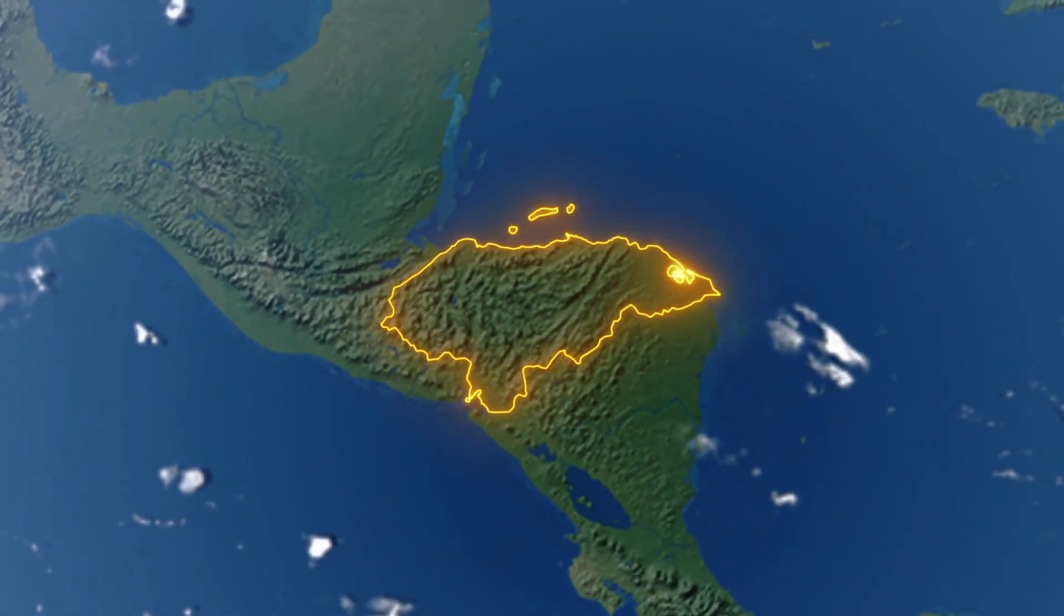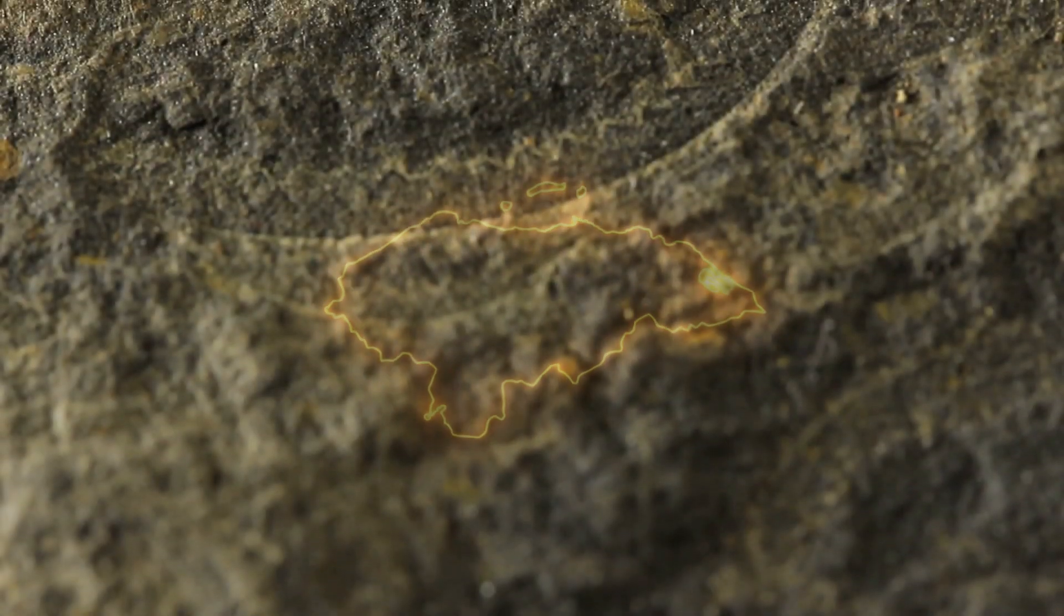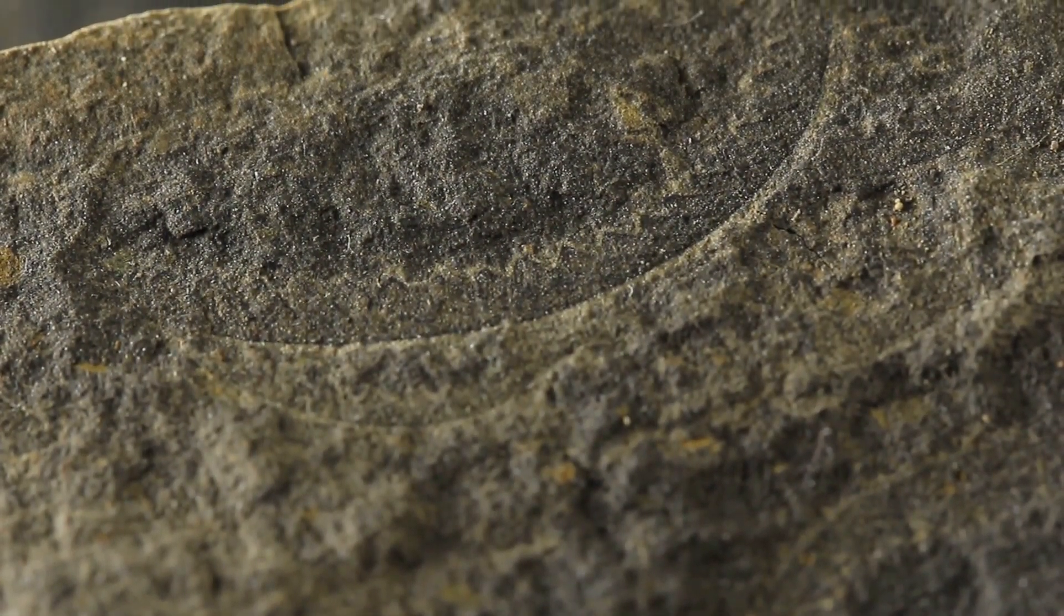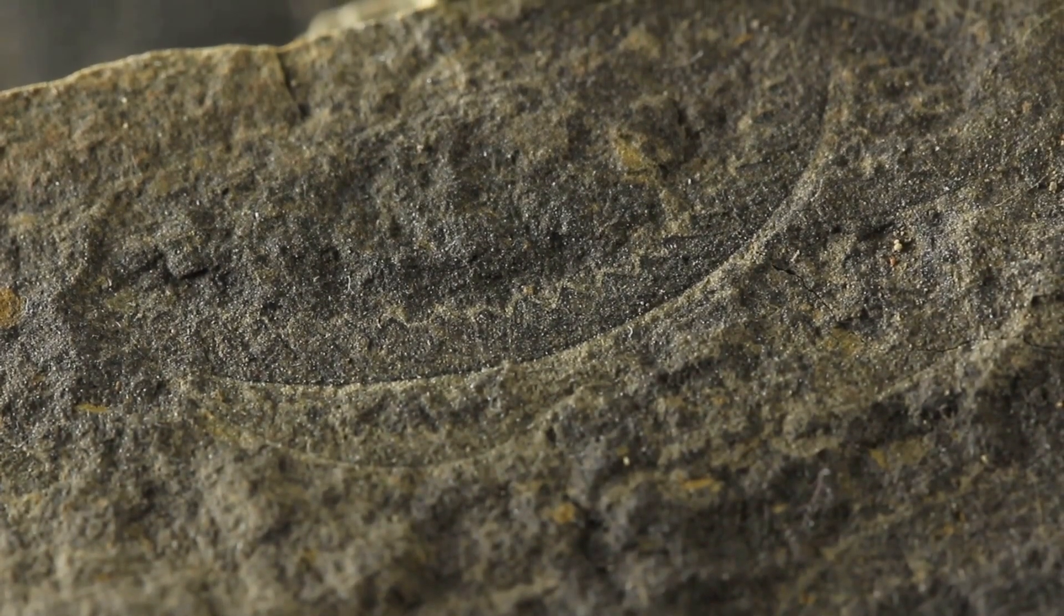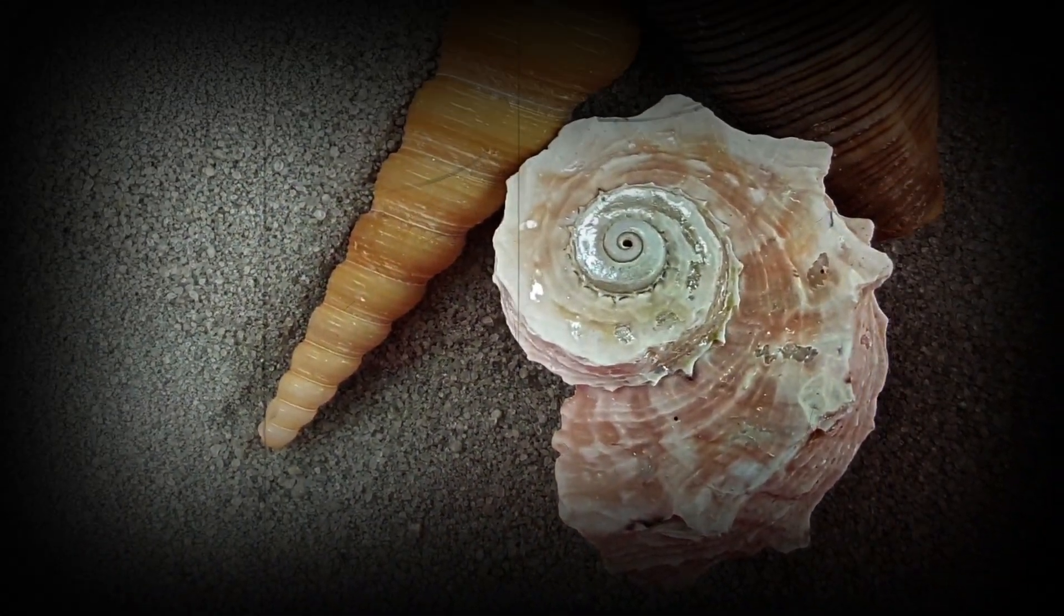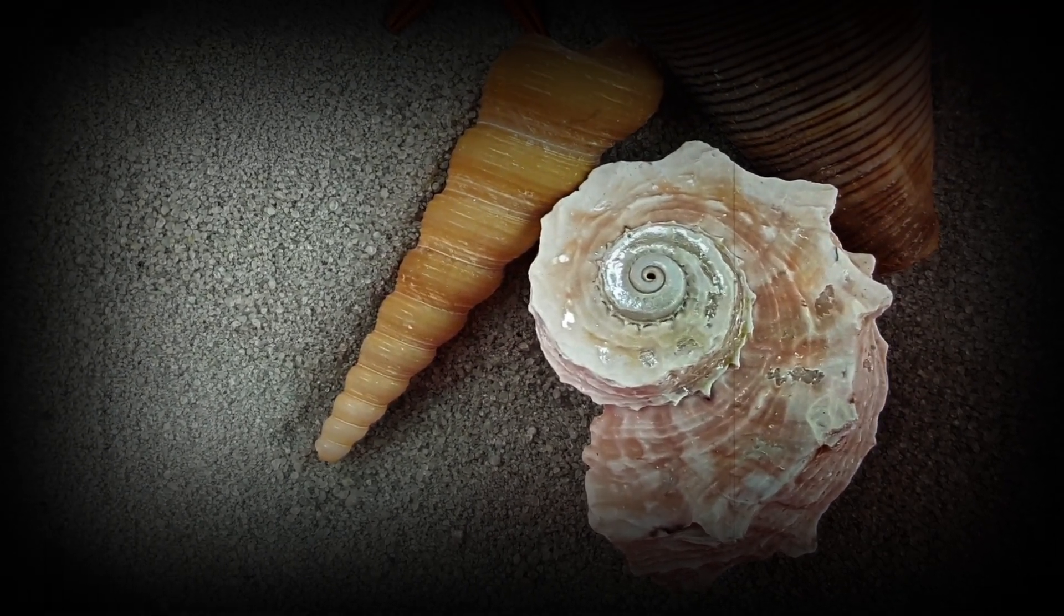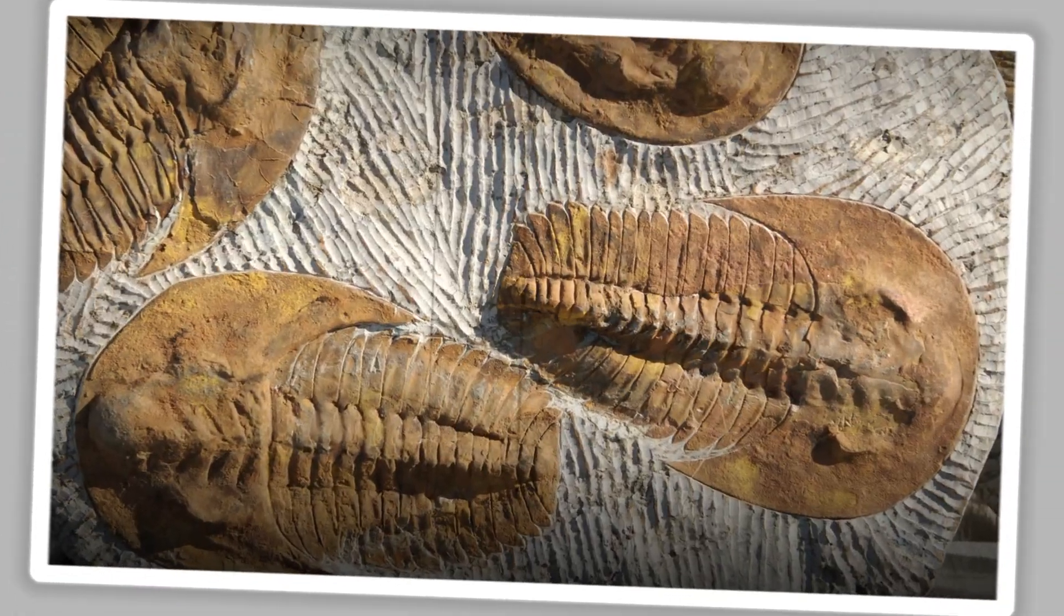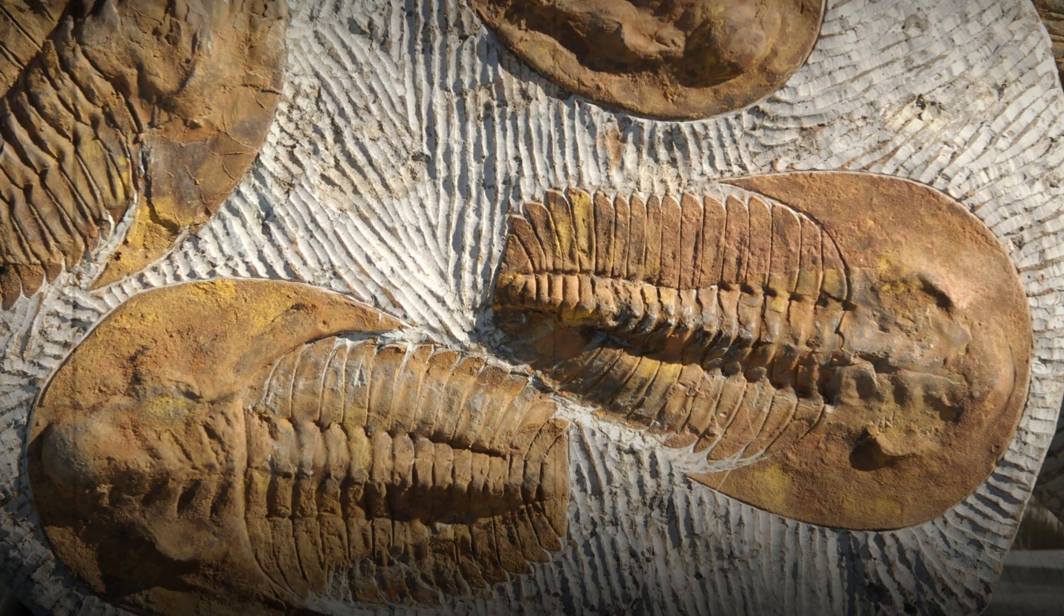Then, between 540 and 485 million years ago, there was an explosion of new life. The Cambrian explosion was named after this period, and the animals that emerged during this time period had hard body features like shells or spines. The most famous were the trilobites, which resembled aliens.